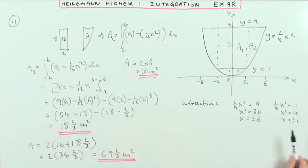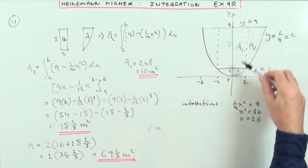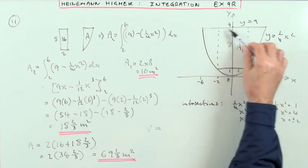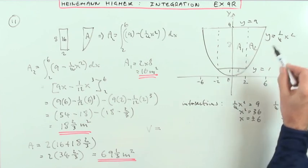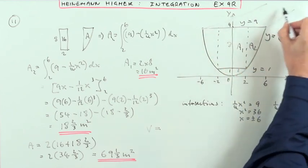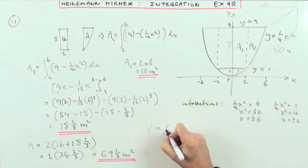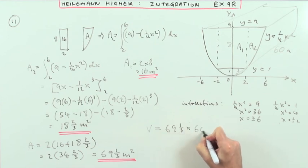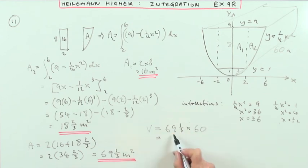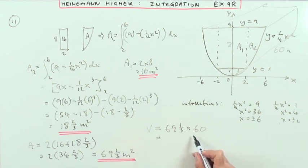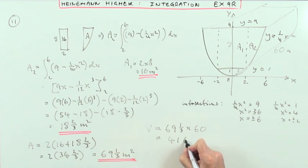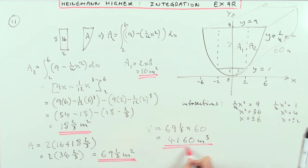The question asked for the volume. This makes a prism — the question said the length is 60 metres. The cross-sectional area is 69 and 1 third, so the volume is 69 and 1 third times 60. That's almost 70 times 60 which would be 4200, minus 2 thirds of 60 which is 40. So 4200 minus 40 gives 4160 cubic metres.